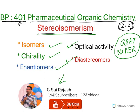You can just type in my name in YouTube — G Sairajesh — and you will get my channel. I have 123 videos and 1940 subscribers. If you like the video content, do subscribe. Let us get into the class.